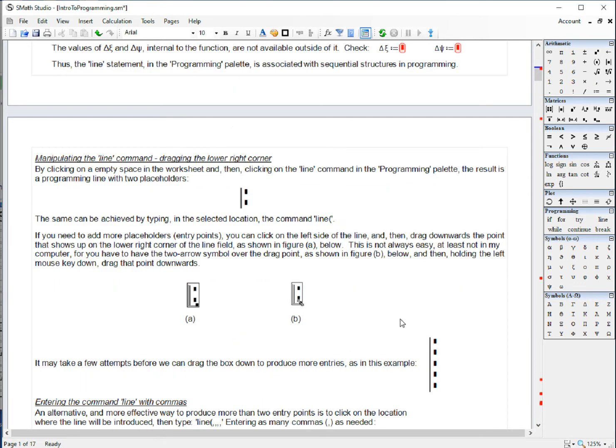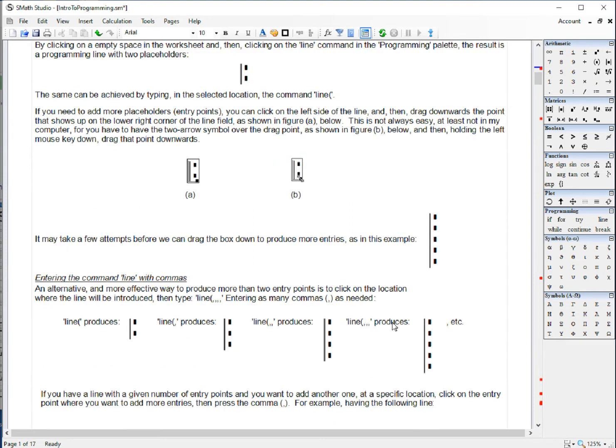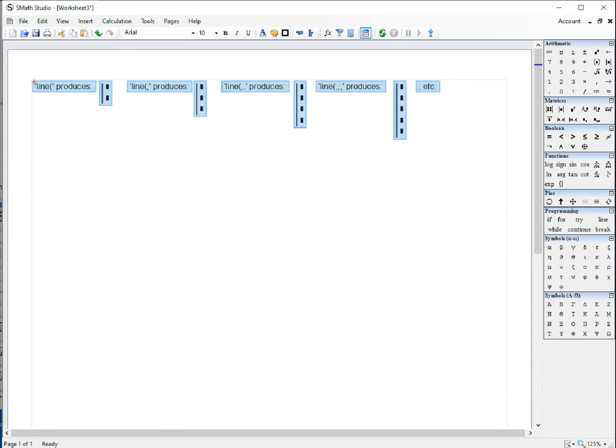As I mentioned, dragging is one possibility, but there is also this possibility indicated here that I'm going to show you in a new page. Instead of using the line command here from the programming palette, you're just going to type the word line, and so if you type line parenthesis, you get the line with two entry points. If you type line parenthesis comma, you get three entry points.